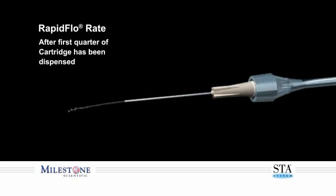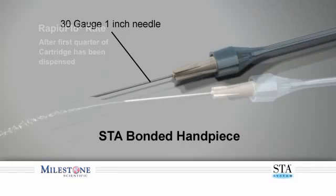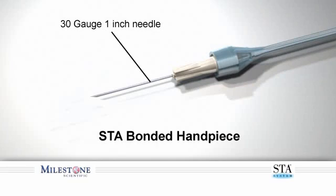It is important to remember that rapid flow is used during supraperiosteal buccal infiltration injections or mandibular blocks only after the first quarter cartridge has been dispensed and the patient has acknowledged that they have soft tissue anesthesia of the area being injected. To administer a supraperiosteal infiltration injection,